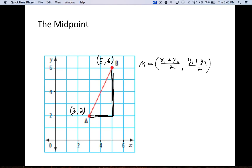So in this problem, our x's, our first x is 3 and our second x is 5. So we're going to add those together. The midpoint here is equal to 5 plus 3 divided by 2, comma...